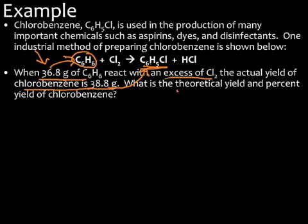So we want to know first, what is the theoretical yield? So what's the maximum amount of our product that we could produce? And then what is our percent yield? So what's the comparison between the actual yield and the theoretical yield? Or how efficient is this actual reaction? So what we have to do first here is we're going to first calculate our theoretical yield. So to do that, we're going to do a stoichiometry problem that starts with our reactant and goes to our product. So we're going to start with our 36.8 grams of C6H6.